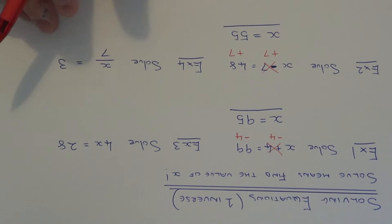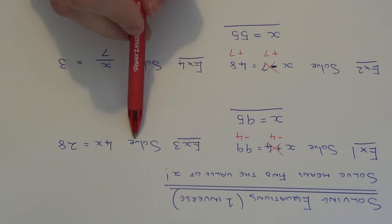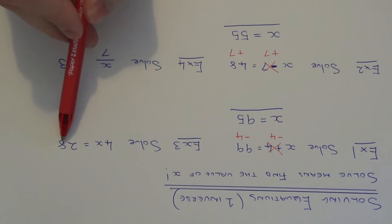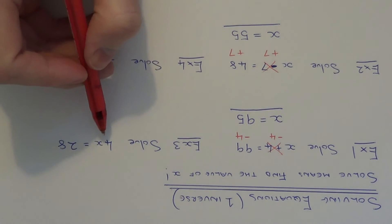Let's go on to example 3. So this time we need to solve the equation 4x equals 28. So look on your left hand side, this time x is being multiplied by 4 because it's 4x.